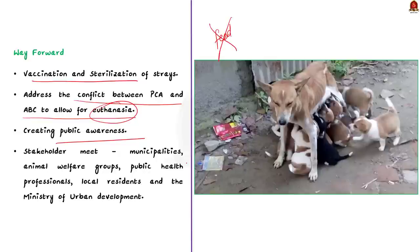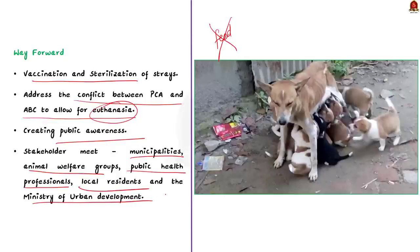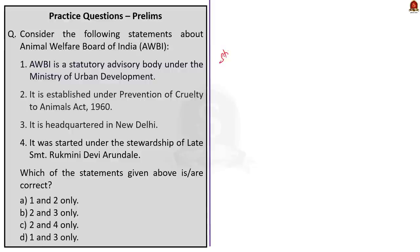Finally, all stakeholders like municipalities, animal welfare groups, public health professionals, local residents, and the Ministry of Urban Development should be brought together to take proactive steps. In this particular discussion, we saw about the stray dog crisis in India and what can be done to address the issue.